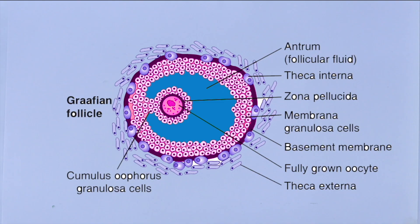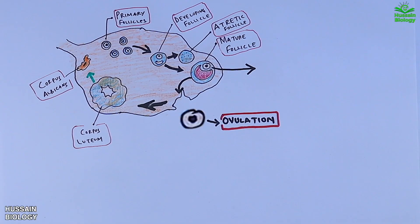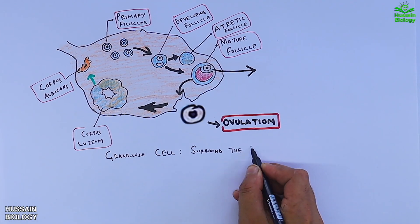Here in this diagram we can see the Graafian follicle. In the middle we have the fully grown oocyte. It has got antrum in the center, that's follicular fluid, membranous granulosa cell, theca interna, and theca externa. The granulosa cells surround the oocyte within the follicle.